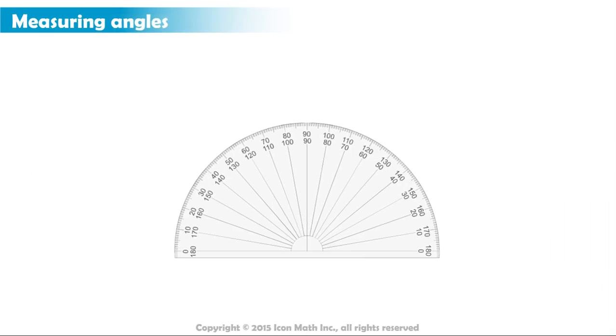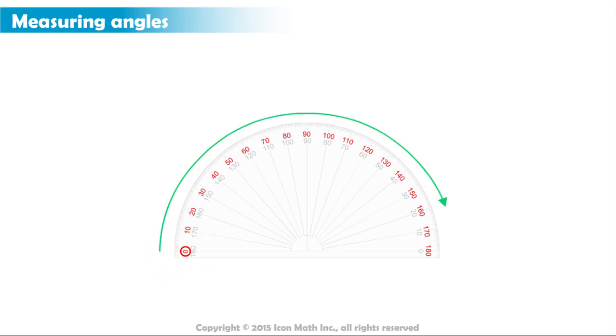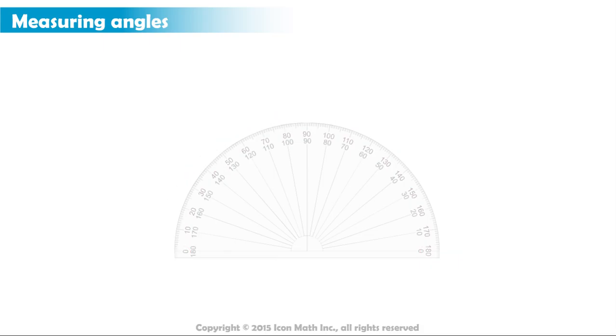As you can see here, we have two zero points. Here and here. Let us take this one. It goes from zero to 180. The other one goes in the opposite direction.